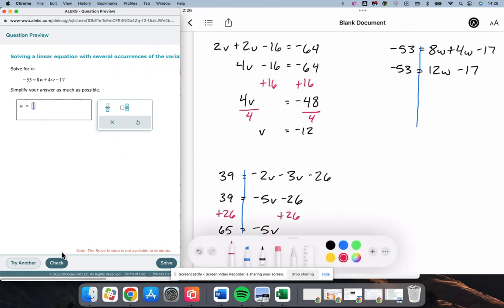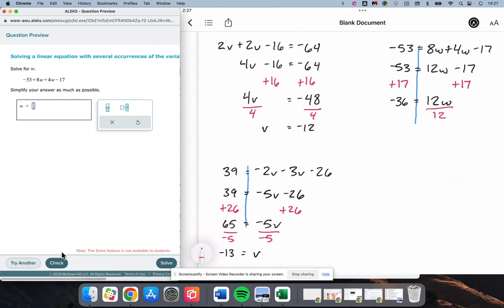8w and 4w is going to make 12w minus 17. We see that we're subtracting 17 from the right side. We need to add 17 to both sides then. And we get negative 53, it's going to be 53 minus 17. Negative 36 is equal to 12w because the negative 17 and positive 17 make 0. We're multiplying 12 by w, and we need to divide both sides by 12. Which gives us negative 3 is equal to w.